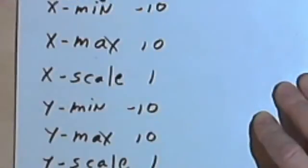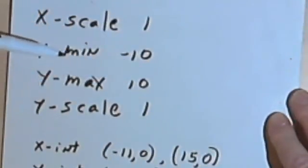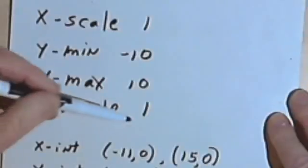And by default it's usually set to x-min at negative 10, x-max at 10, x-scale at 1, and then a negative 10, a positive 10 for the y-min and y-max and a 1 for the y-scale.